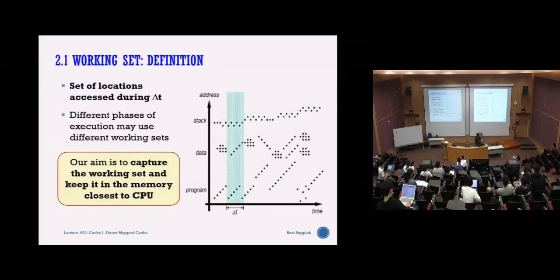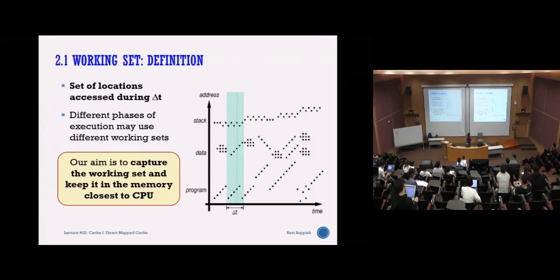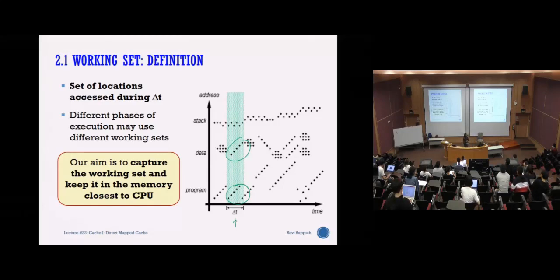Knowing there is always this locality in terms of time and space, I can capture what is known as a working set. A working set means taking a snapshot of accesses over a limited period — within that time frame I see I access certain lines of code and certain data. Knowing that I'm regularly accessing this set of instructions and this set of data, I keep this information close to the processor so it doesn't need to keep going out to memory to fetch data.